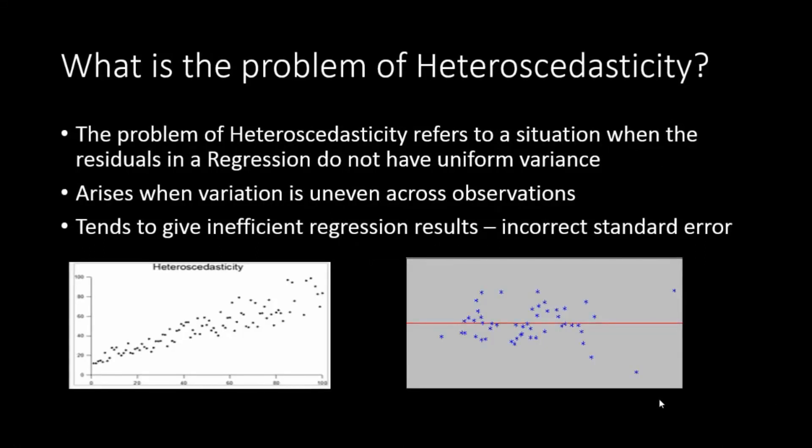The first question is: what is the problem of heteroscedasticity? The problem of heteroscedasticity refers to a situation when the residuals in a regression do not have uniform variance.